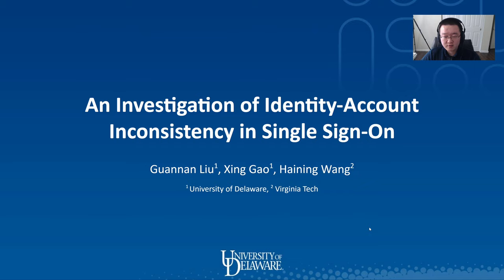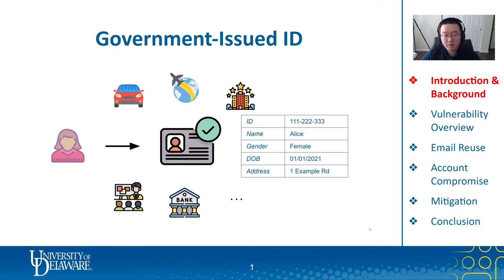Before I go into the technical details about our work, I would like to start this presentation with an analogy of how single sign-on is used in the real world. I assume that many of us have at least one government-issued ID. It may contain many pieces of information such as ID number, our name, gender, date of birth, and even our addresses. With this identification, we could receive many services and privileges from businesses and our society. For example, we may be allowed to drive a car in a specific country or region.